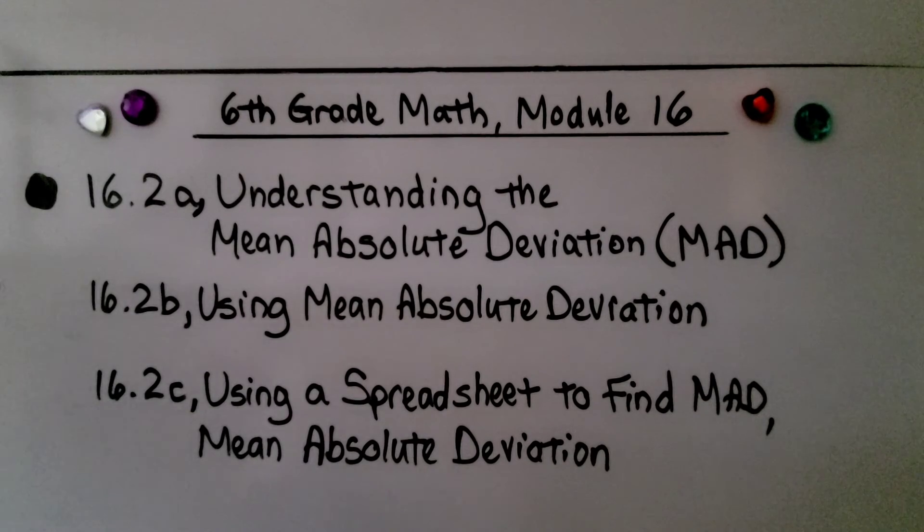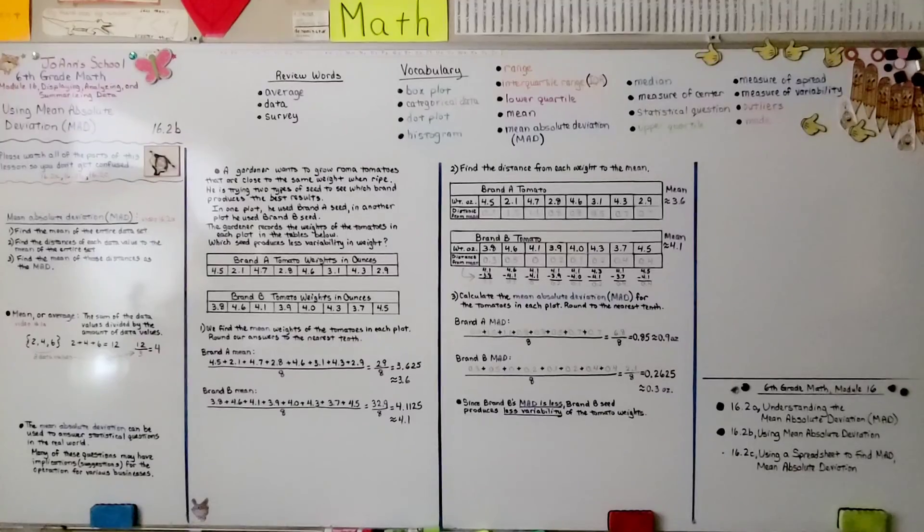Okay, now we've finished the second part of the lesson. We're going to move on to the last part using a spreadsheet to find MAD, the Mean Absolute Deviation. I hope you enjoy the rest of your day and join me for the last part of the lesson.